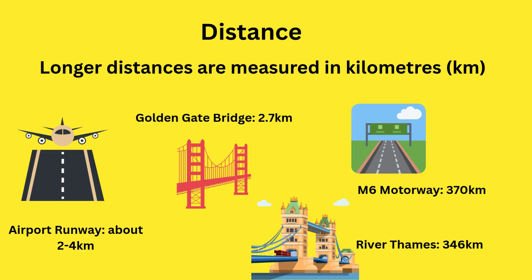Longer distances are measured in kilometers. An airport runway is about 2 to 4 kilometers. The Golden Gate Bridge is 2.7 kilometers. The M6 motorway is 370 kilometers. And the River Thames is 346 kilometers.